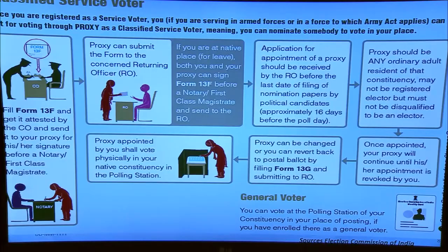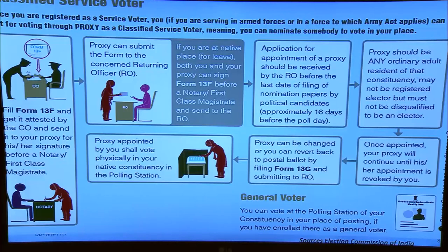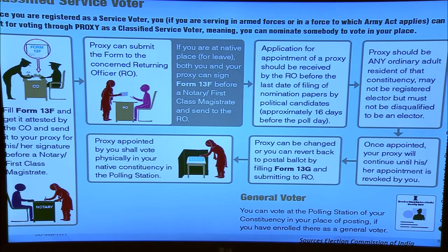A service voter normally casts their vote using a postal ballot, but can also cast their vote through a proxy. For proxy voting, download form 13F, get it attested, notarize it through a first class magistrate, and submit it to the respective ERO. Once you have opted for proxy voting, it will continue for all elections unless you revoke it by submitting form 13G.